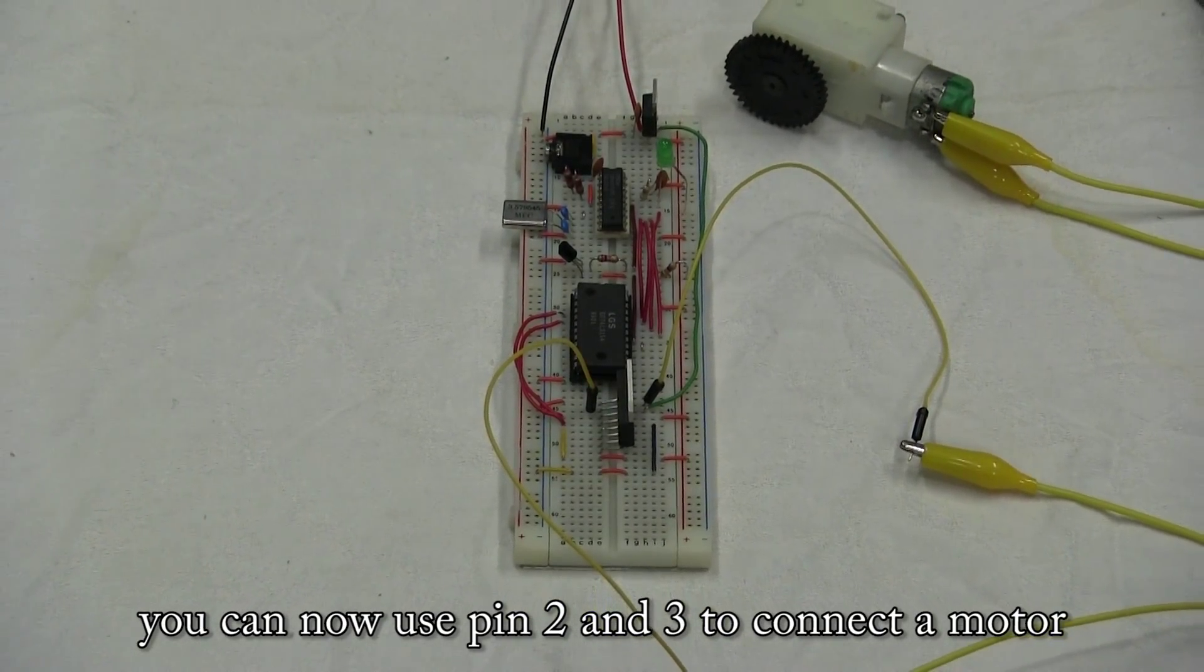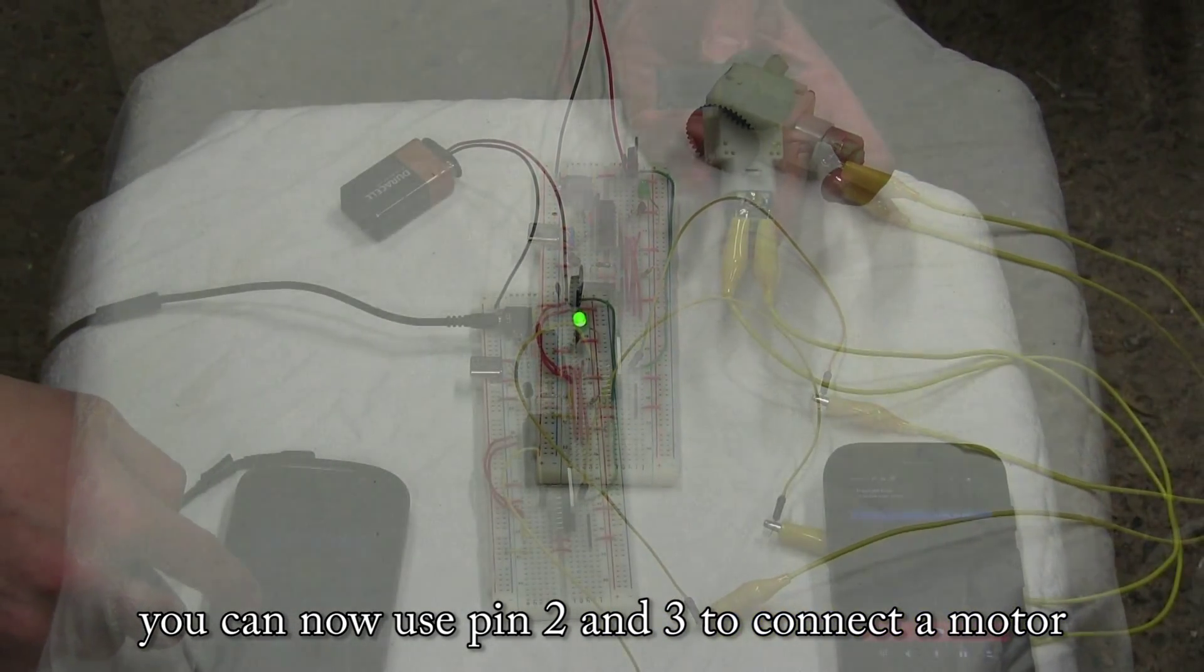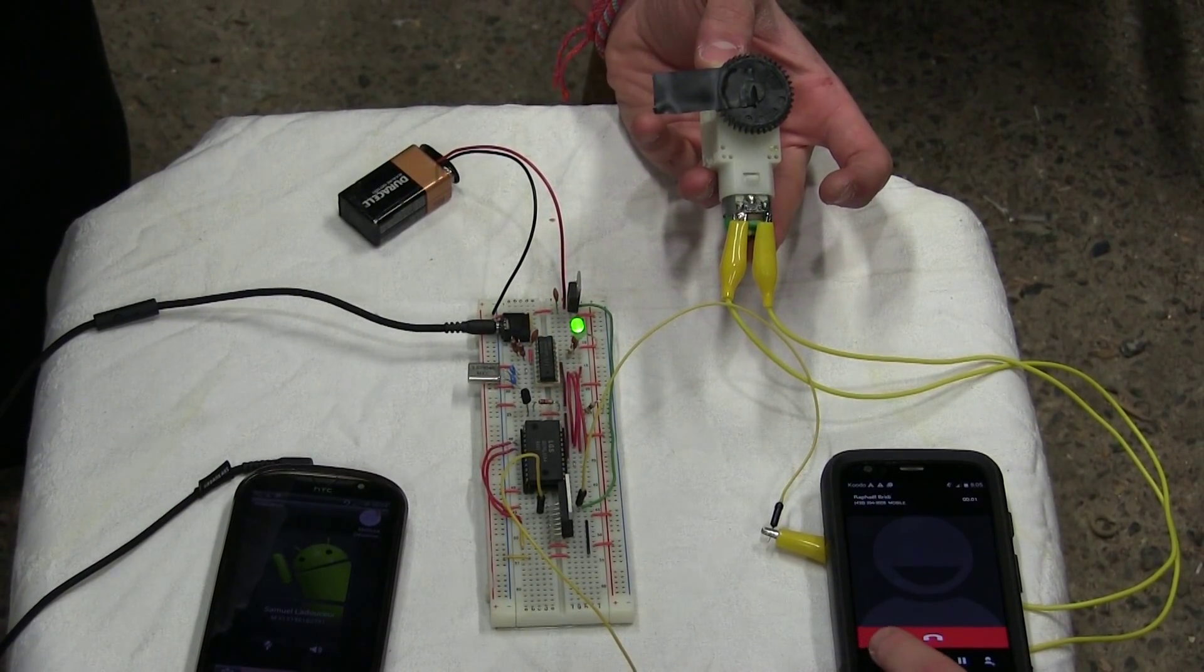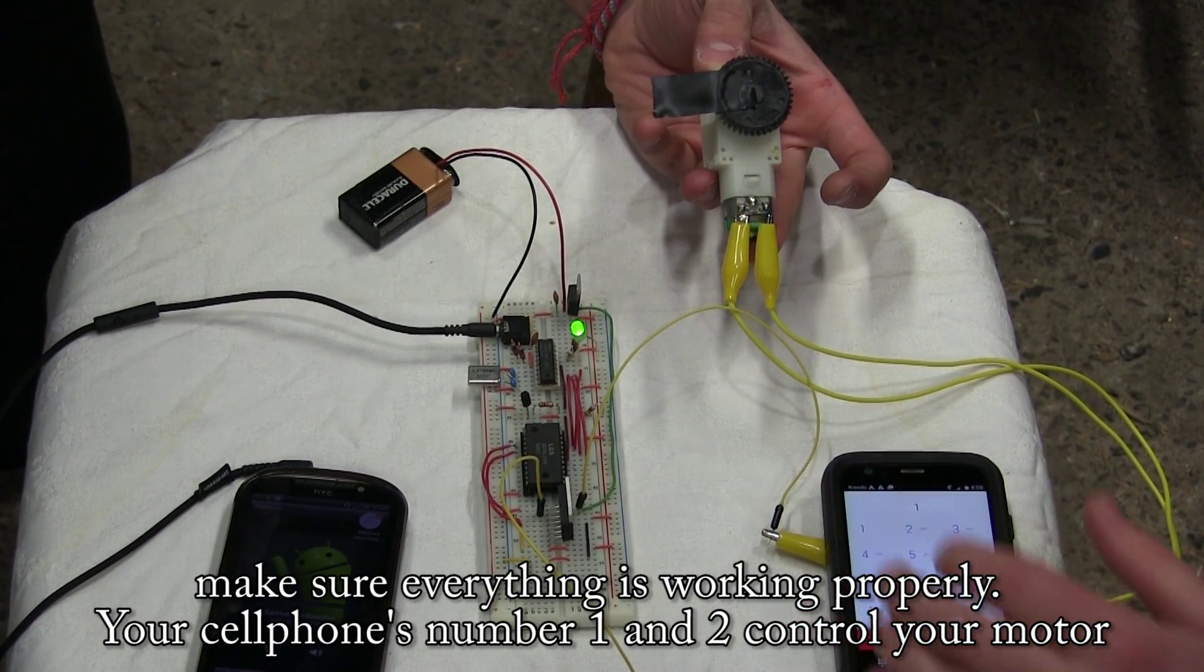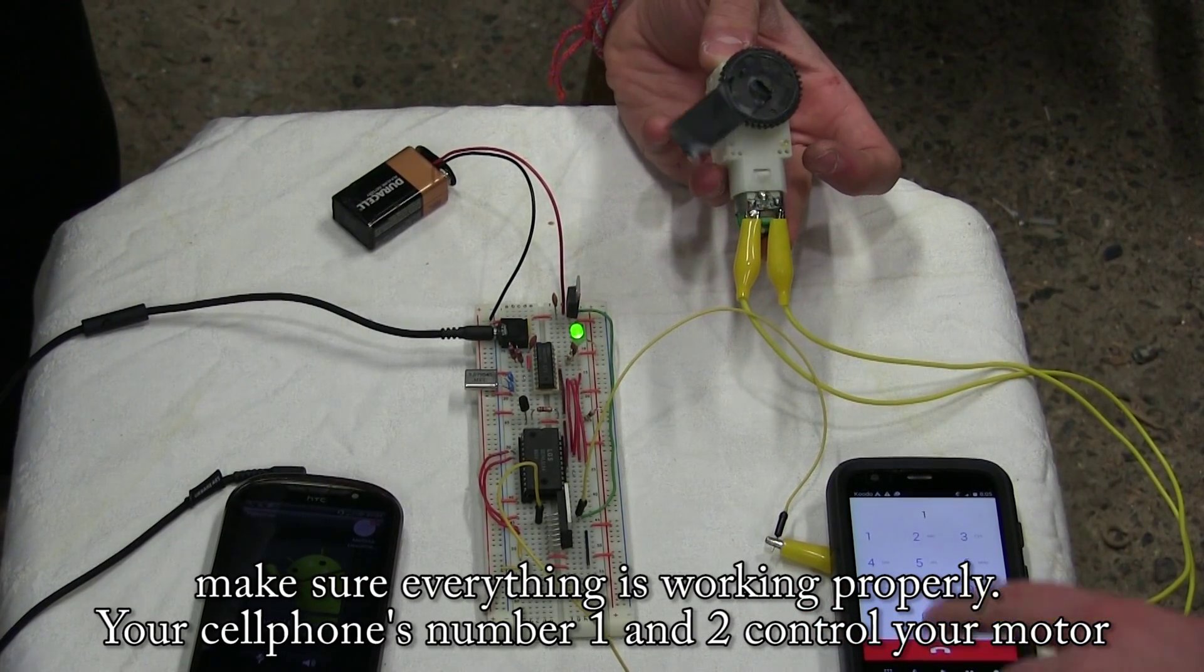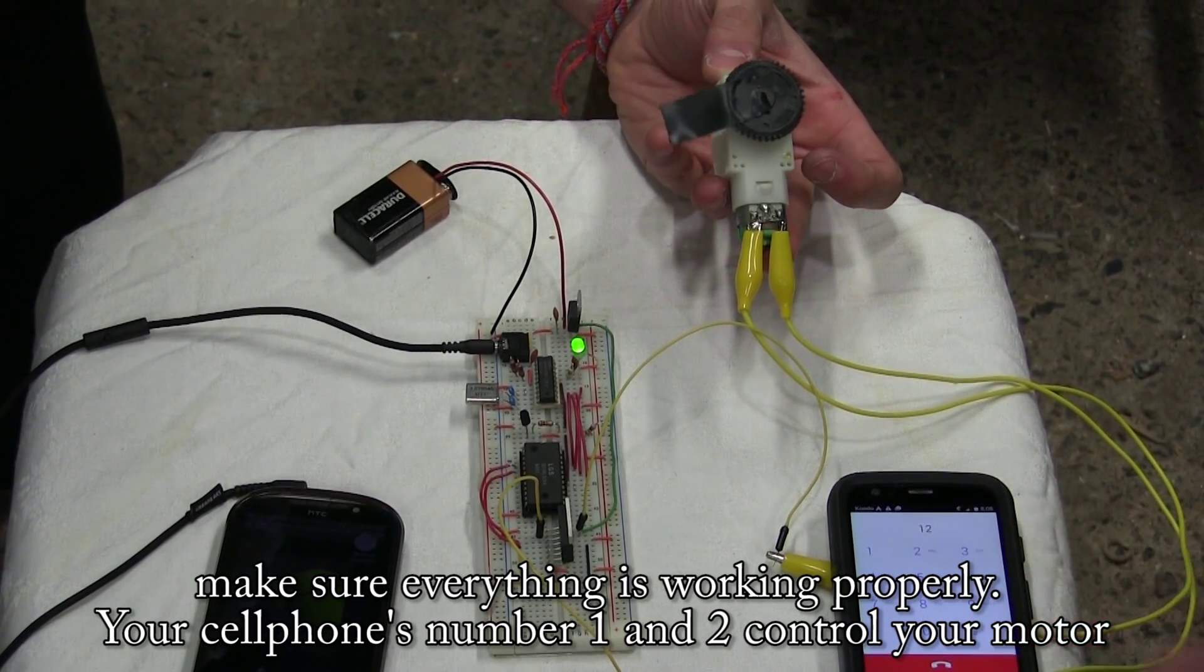You can now use pin 2 and 3 to connect a motor. Make sure everything is working properly. Your cell phone numbers 1 and 2 control your motor.